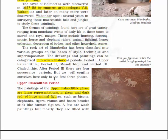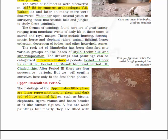The rock art of Bhimbetka has been classified into various groups on the basis of style, technique and superimposition. The drawings and paintings can be categorized into several historic periods: Period 1 — Upper Paleolithic; Period 2 — Mesolithic; and Period 3 — Chalcolithic. We will confine ourselves to these first three periods.